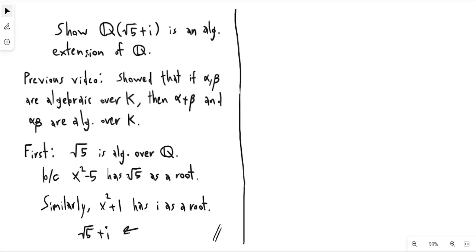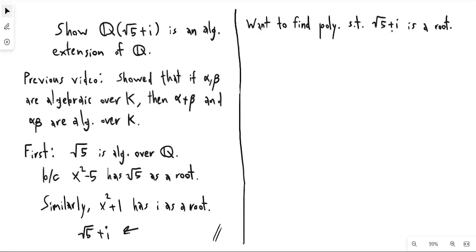Now, to do this more directly, we're going to imagine that we don't have the result about alpha plus beta being algebraic over k. So we want to find a polynomial such that square root of 5 plus i is a root of that polynomial, and this will show directly that square root of 5 plus i is algebraic. So I'm going to set square root of 5 plus i to basically just be x.